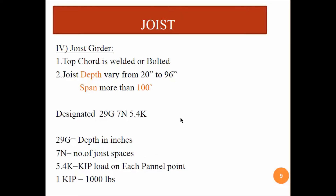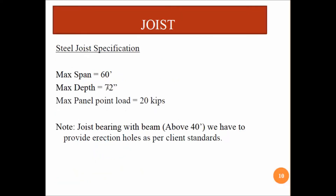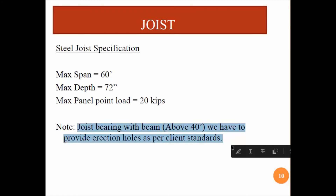The ultimate specifications show a maximum span of 60 feet, maximum depth of 72 inches, and maximum panel point load of around 20 kips. Additionally, for joist bearing with beam above 40 feet, erection holes must be provided as per the client standard.